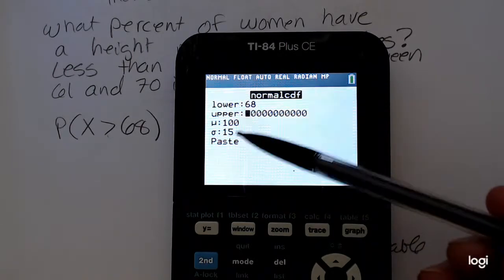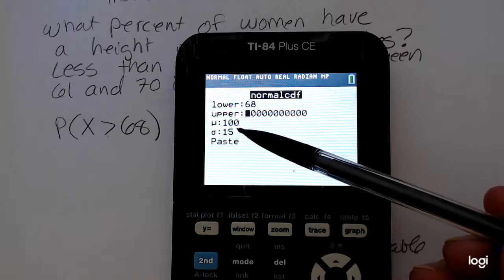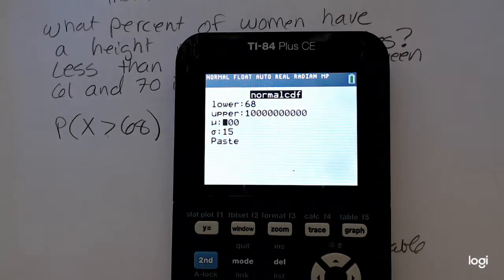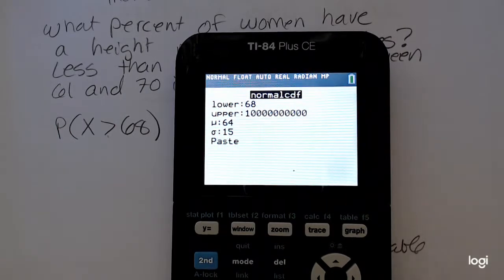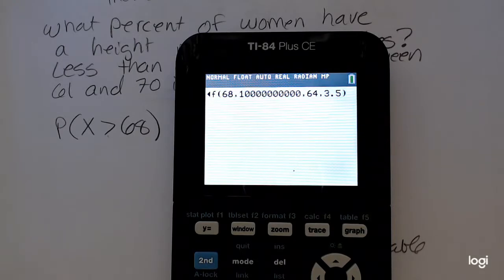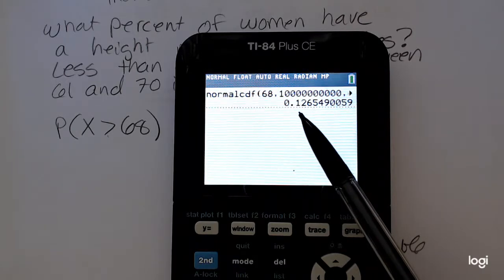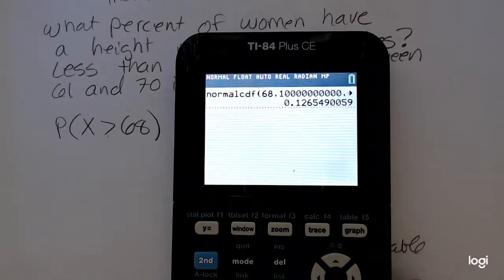This is left over from a previous example. The mean is not 100, and the standard deviation is not 15. I need to change that to match the problem. So I have 64 and 3.5 for mu and sigma, respectively. And then entering again, rounding to three decimal places, I get 0.127.